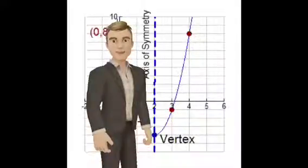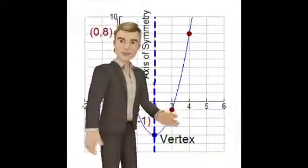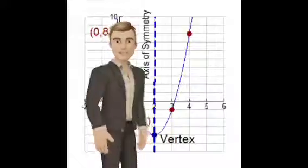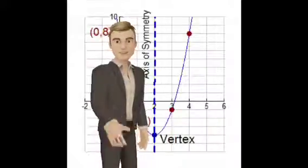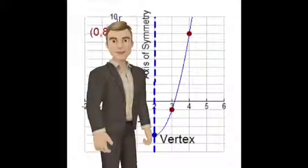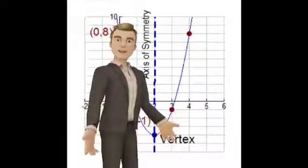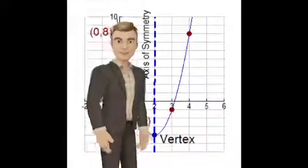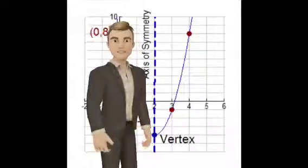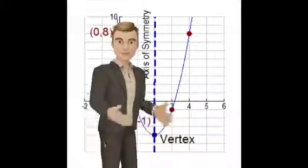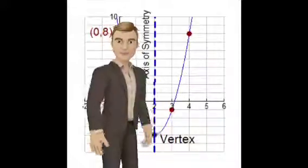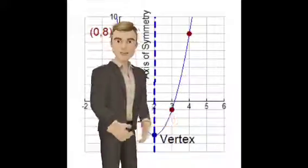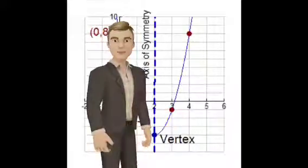My word is vertex form. The vertex form of a quadratic function is given by f(x) equals a times the quantity x minus h, squared, plus k. Usually the vertex is at the very peak of the curve on the graph.